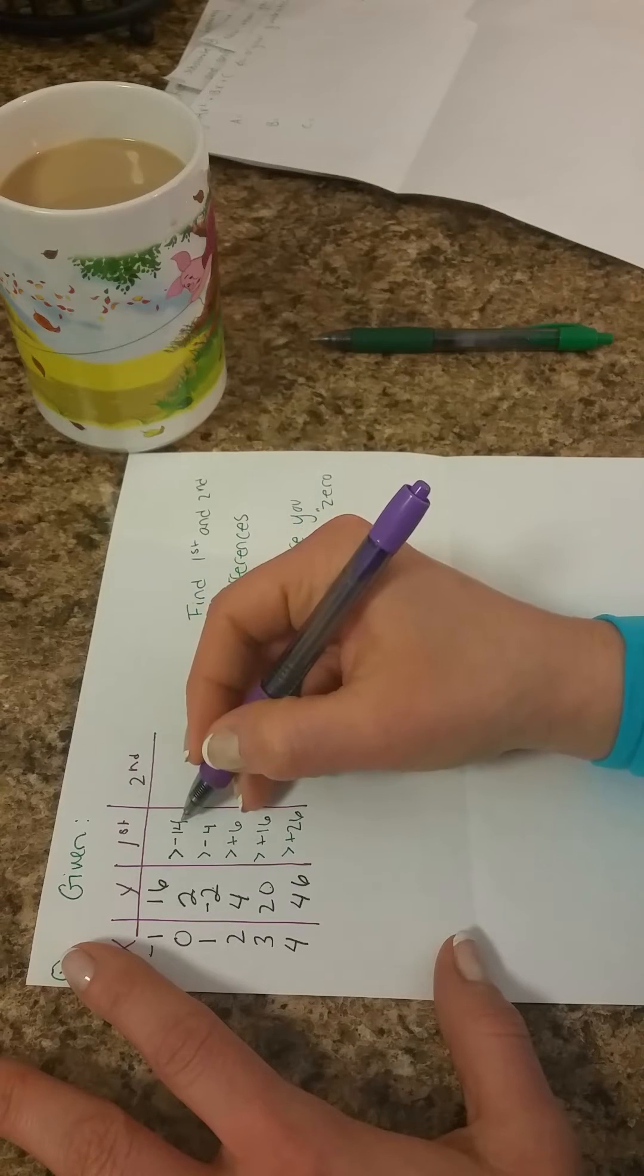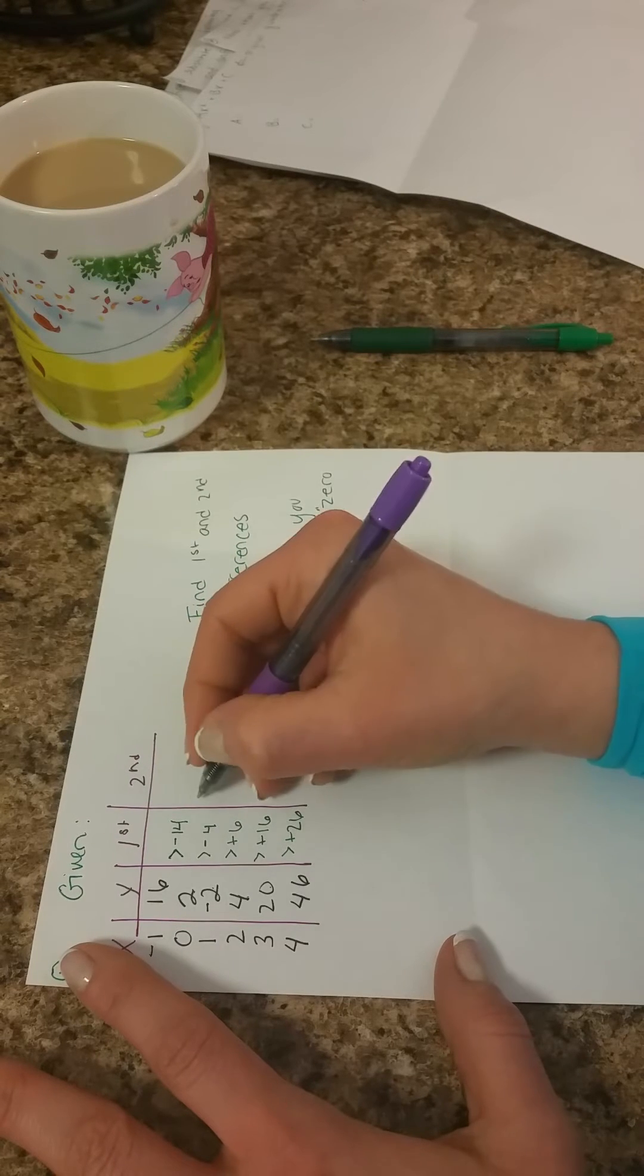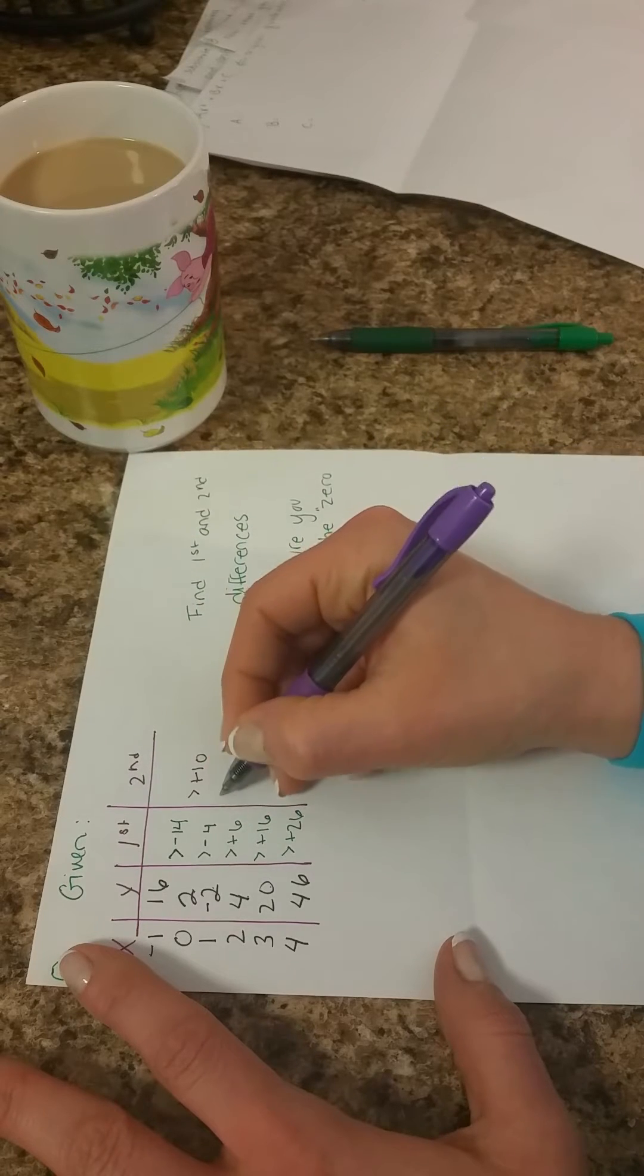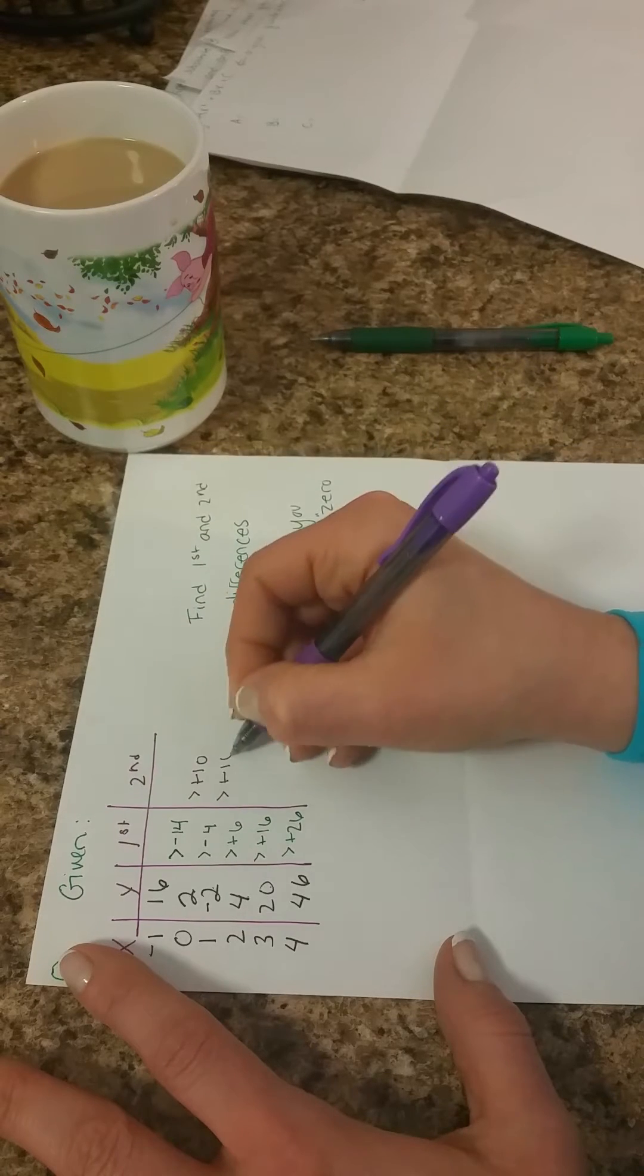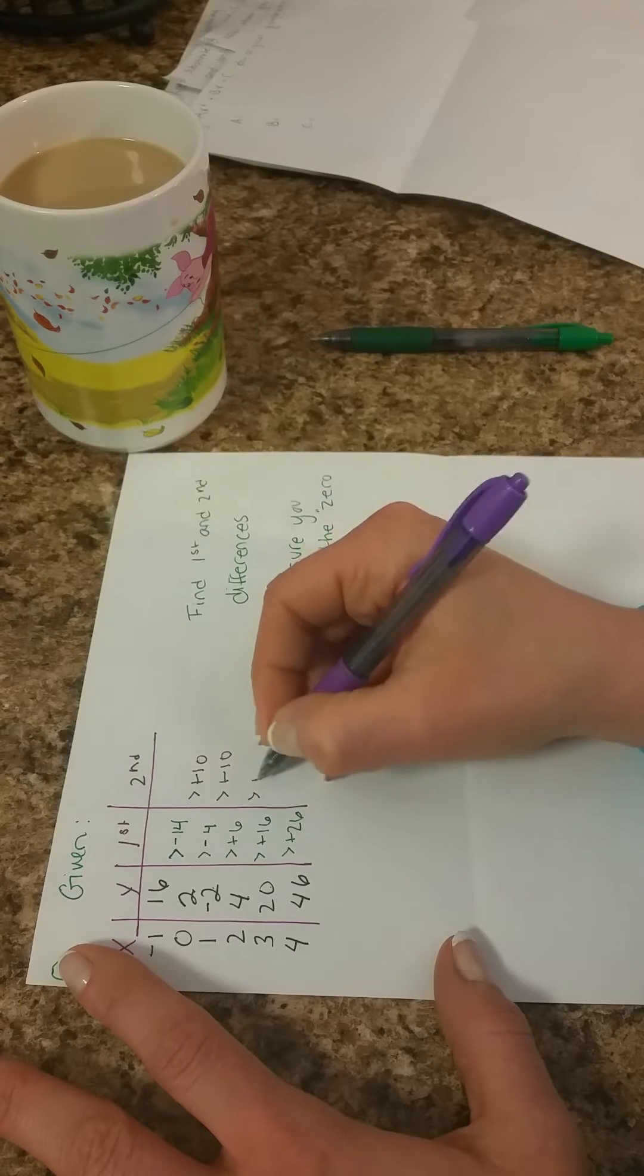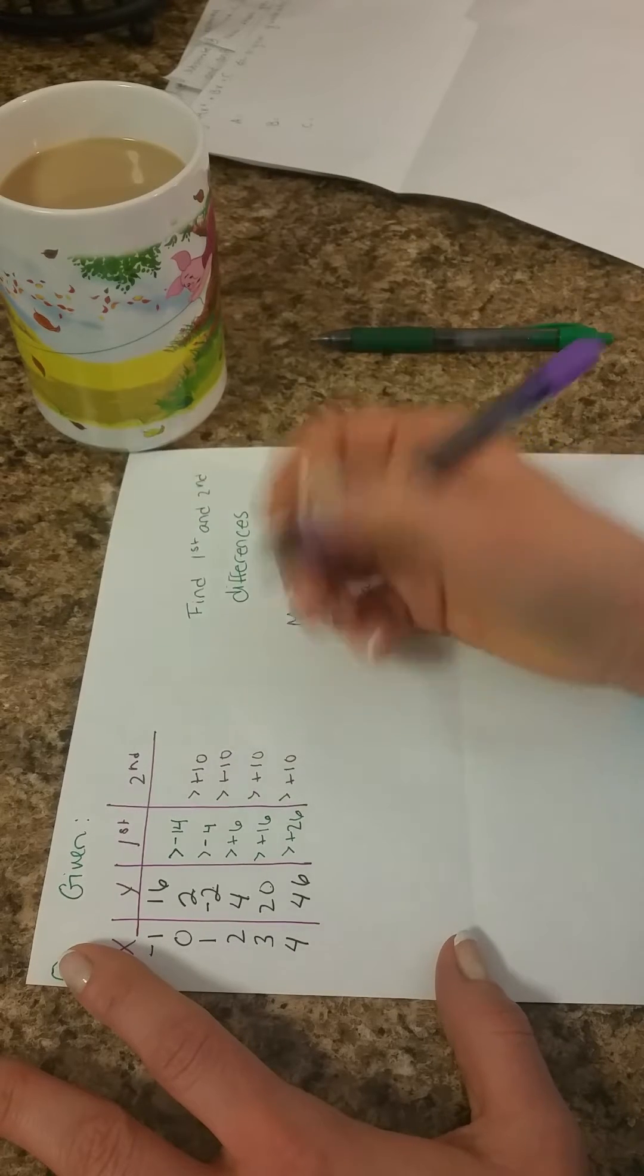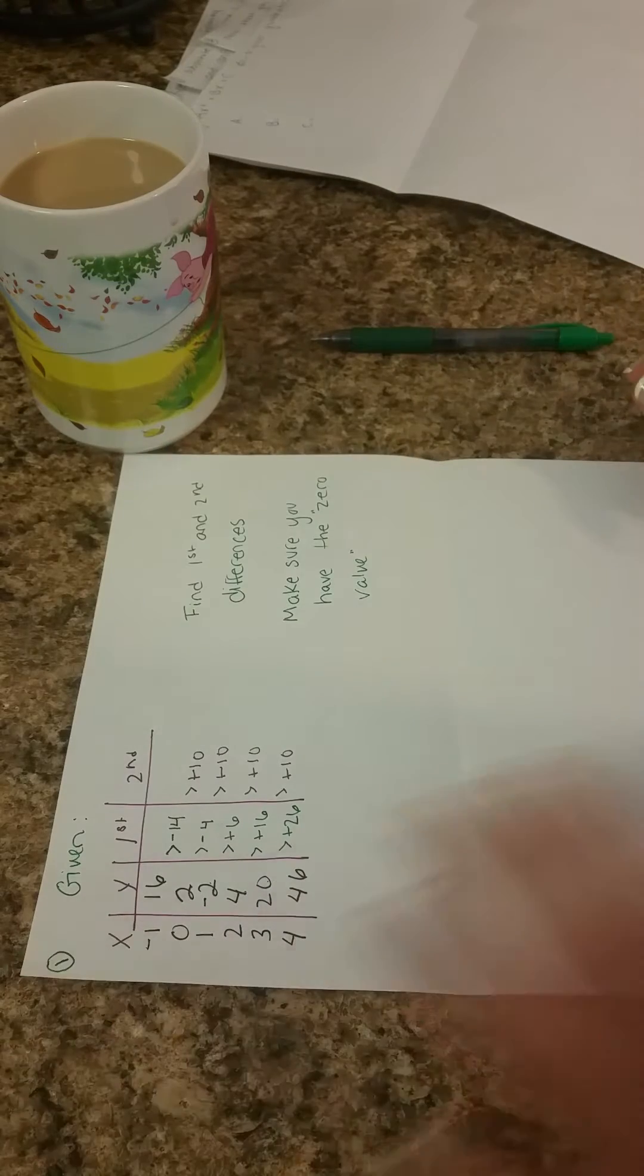The second difference, so our difference between negative 14 and negative 4 is plus 10. Negative 4 to positive 6 is plus 10. 6 to 16 is plus 10. And 16 to 26 is plus 10. Yes, it's quadratic. So this works.